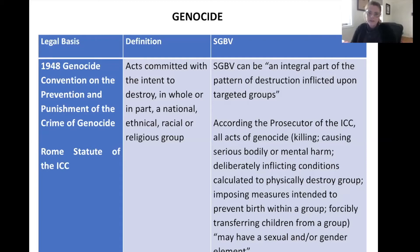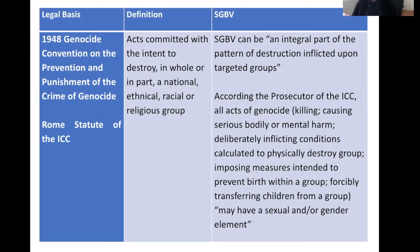The prosecutor of the ICC has determined that SGBV can be an integral part of the pattern of destruction inflicted upon targeted groups, drawing on jurisprudence like the Akayesu case. According to the prosecutor, all acts of genocide — killing, causing serious bodily or mental harm, deliberately inflicting conditions to physically destroy a group, imposing measures to prevent births, or forcibly transferring children — may have a sexual and gender element. If people are killed, tortured, or destroyed particularly because of sexual and gender attributes, that may constitute sexual and gender-based acts of genocide.